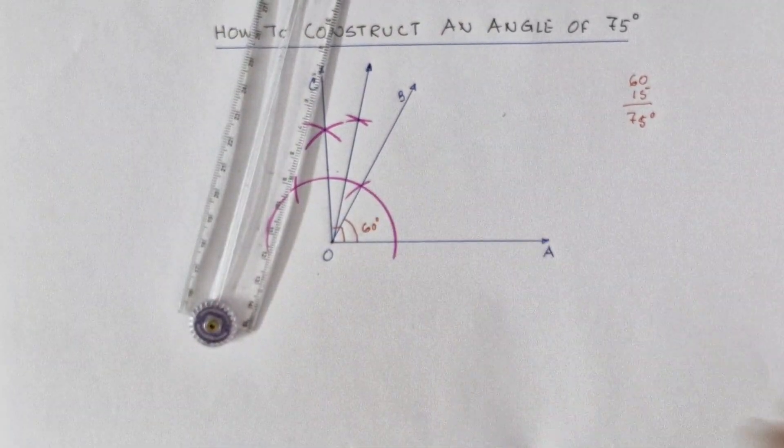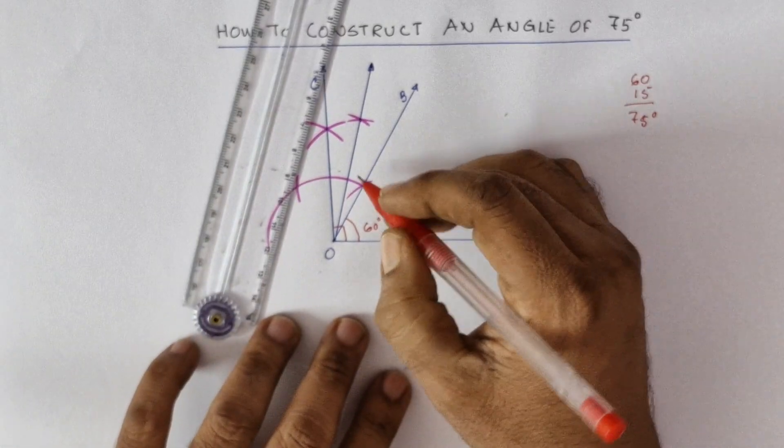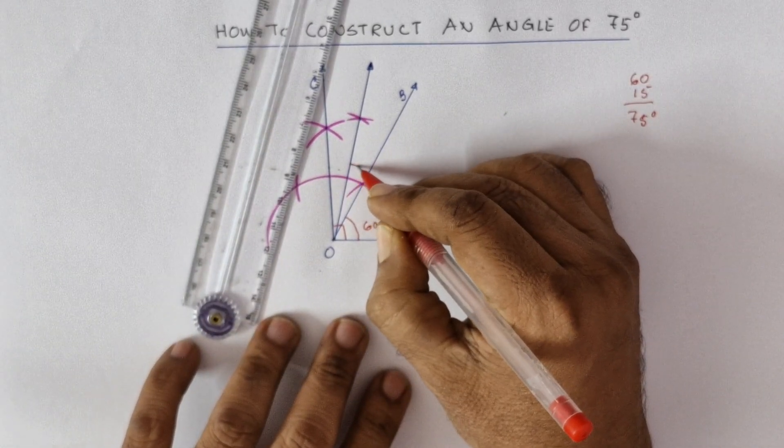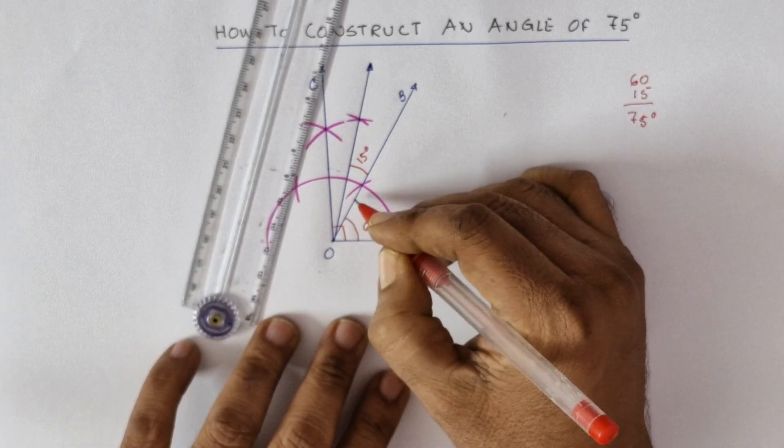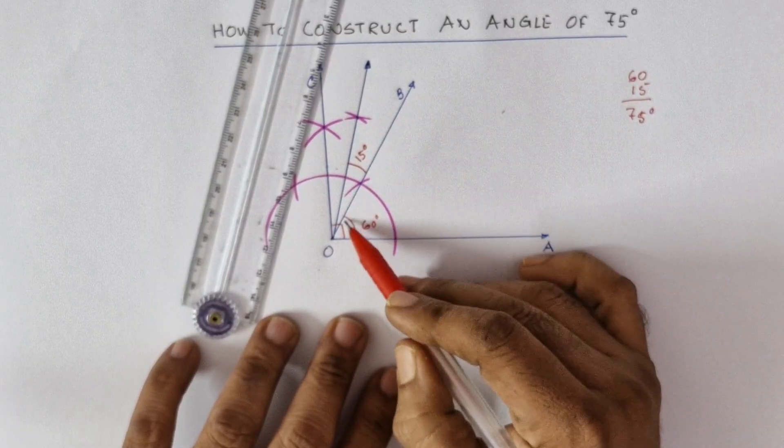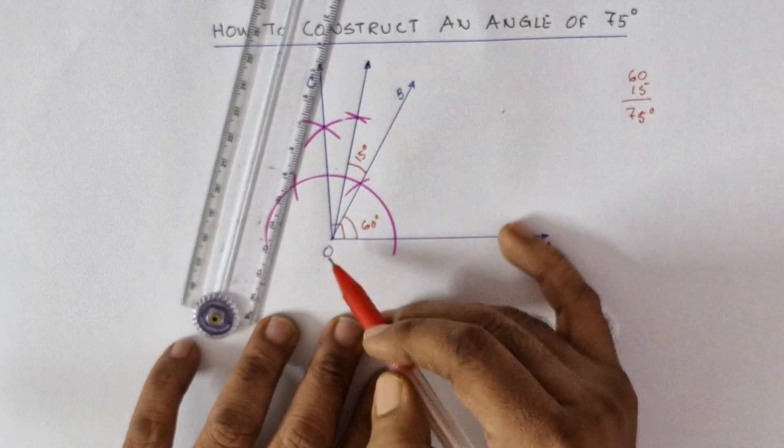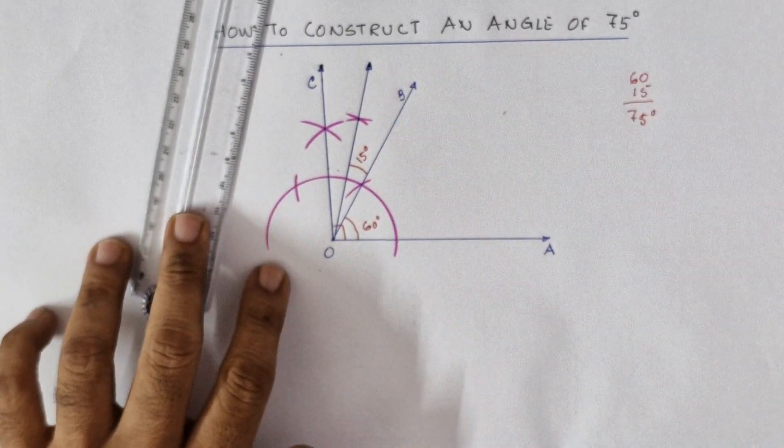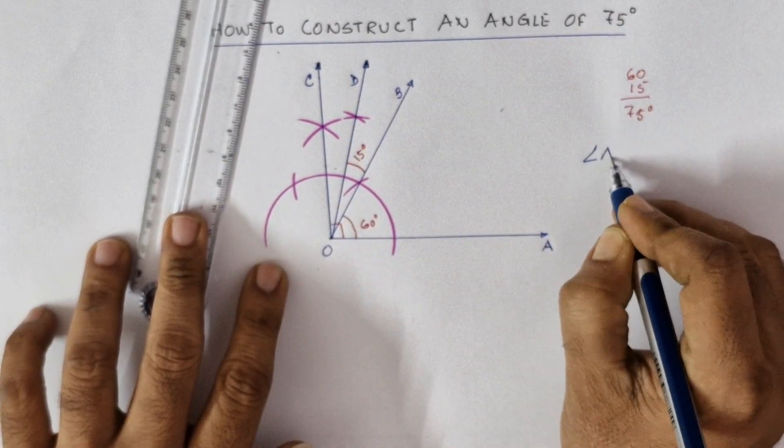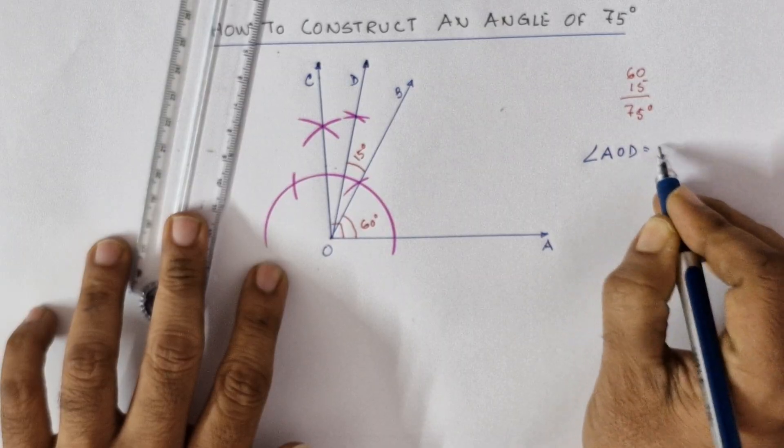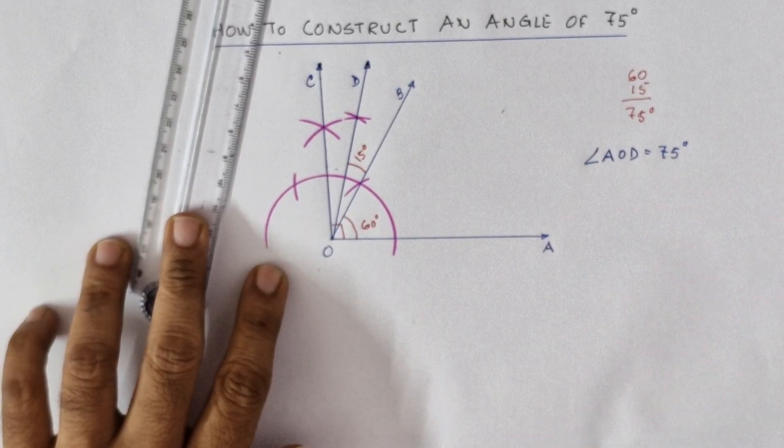This is now 15 degrees as we have bisected 30, so we got 15. So 60 plus 15 is 75. Let's name it as D, so angle AOD is 75 degrees.